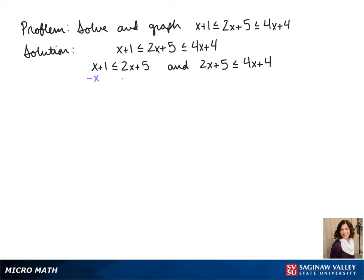So our first step is going to be to get our variables to the same side. So we get 1 is less than or equal to x plus 5. To get x by itself, we subtract 5 and we get x is greater than or equal to negative 4.